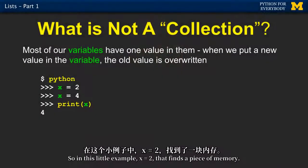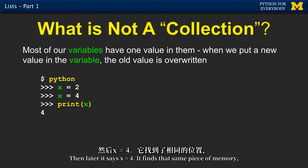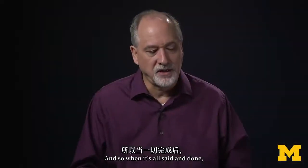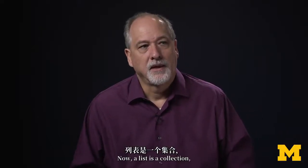In this example, x equals 2 finds a piece of memory, Python labels it x and sticks a 2 in it. Then later it says x equals 4, finds that same piece of memory, and overwrites the 2 with a 4. When it's all said and done, what we have is a 4.